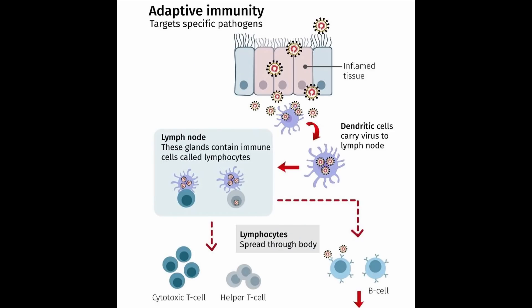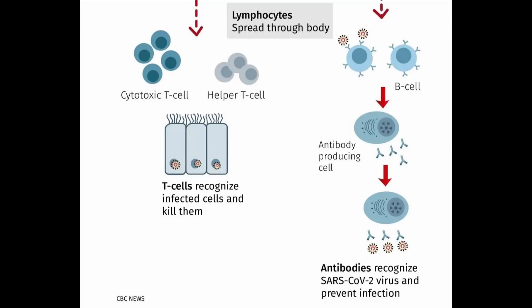This slide shows our adaptive immunity responding. Our body has dendritic cells which identify the virus as foreign and will then carry and present them to white cells called lymphocytes. There are different kinds of lymphocytes, including cytotoxic or killer T cells, as well as helper T cells and B cells. The cytotoxic T cells recognize these infected cells and they kill them, as well as ultimately killing the virus itself.